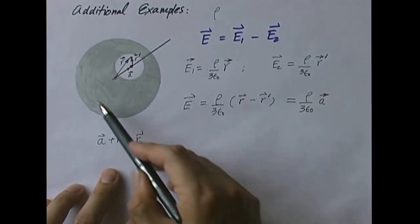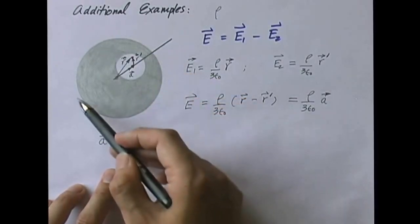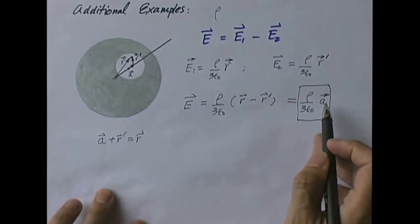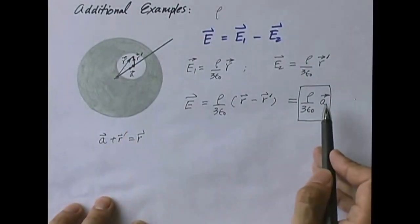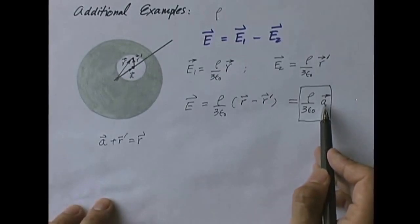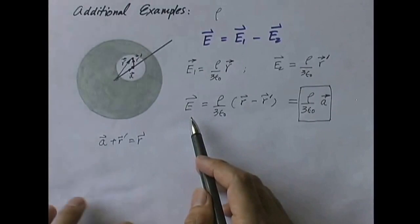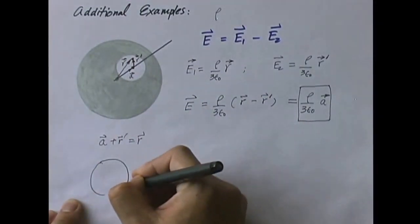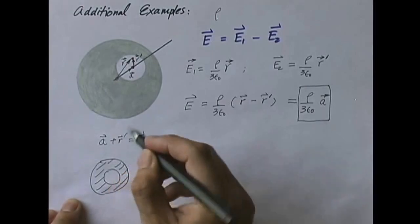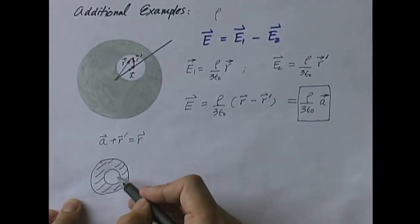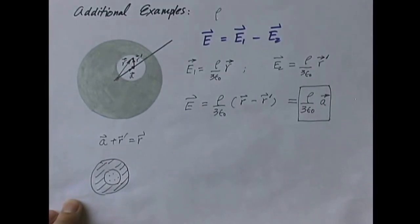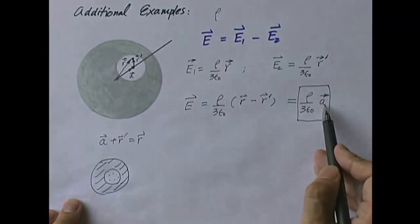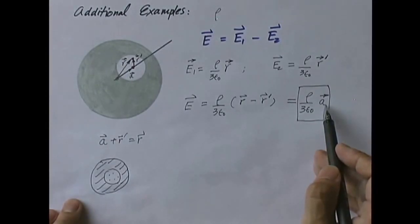Unbelievable! This equals rho over 3 epsilon-naught times A. With a spherical cavity cut out of a uniformly charged sphere, within the cavity you get a uniform electric field — believe it or not. It's entirely uniform; it has nothing to do with the location inside the cavity — it's just a constant. As a special case, when A equals 0, the electric field inside the cavity is 0. When A is 0 the cavity is concentric with the larger sphere, and once you're inside anywhere, the field is 0 — that's part of the Newton shell theorem. If it's off-center, that's what you get: a neat way of getting a uniform electric field from a spherical charge.